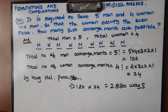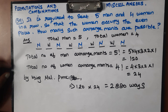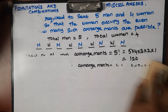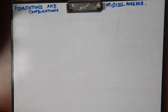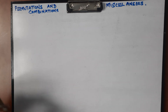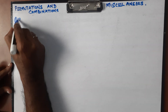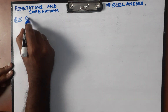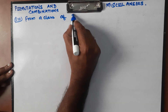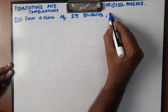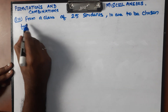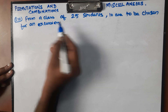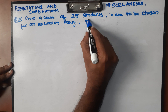This is question number 10. From a class of 25 students, 10 are to be chosen for an excursion party.